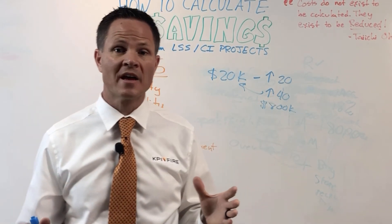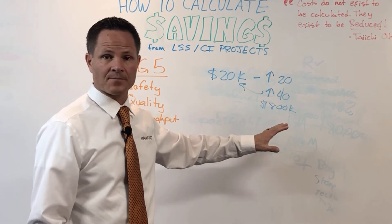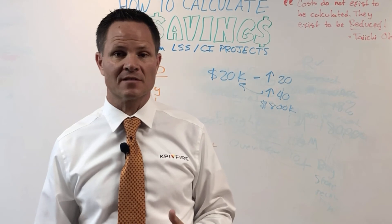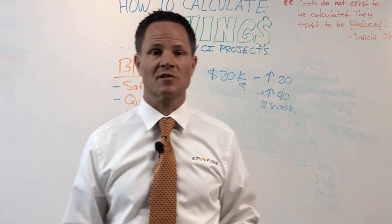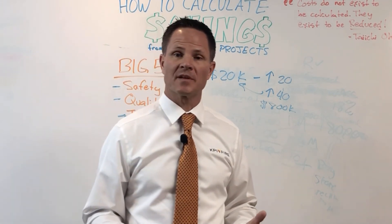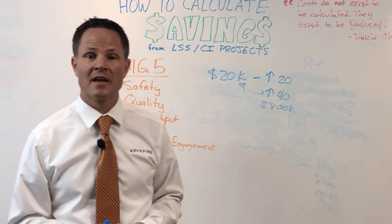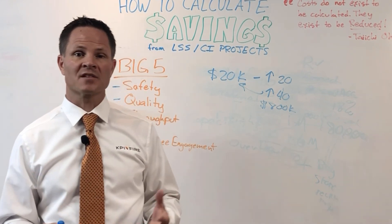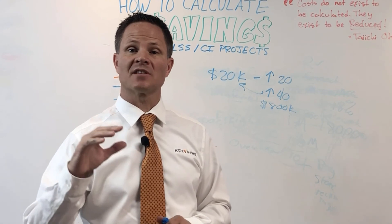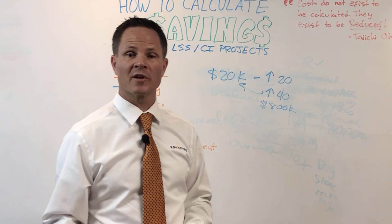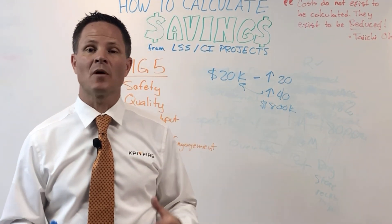You can use that number to make the case for increasing employee engagement and doubling the projects you complete. If you're interested in getting more money out of your Lean Six Sigma team, you can call us at KPI Fire. We provide consulting services in addition to our software platform and go into companies to help them save real money. We did a project last year with a company that saved over a million dollars in under two months — we evaluated their processes and identified savings in inventory and cost avoidance by increasing their capacity.